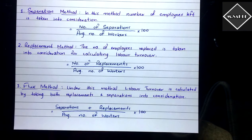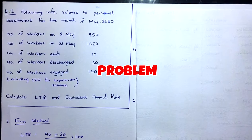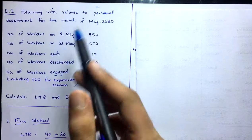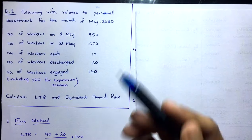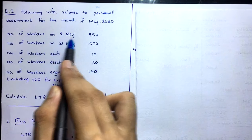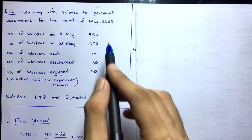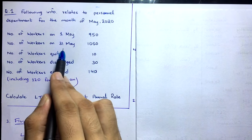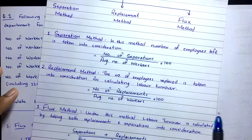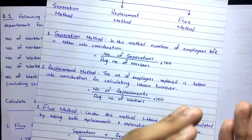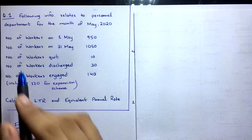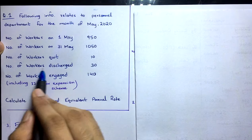Now let's solve a problem. The following information relates to a personnel department for the month of May 2020. Number of workers on 1st May: 950; number of workers on 31st May: 1050. This gives us the beginning and end figures, from which we can calculate average number of workers. Number of workers who quit: 10; number of workers discharged: 30.